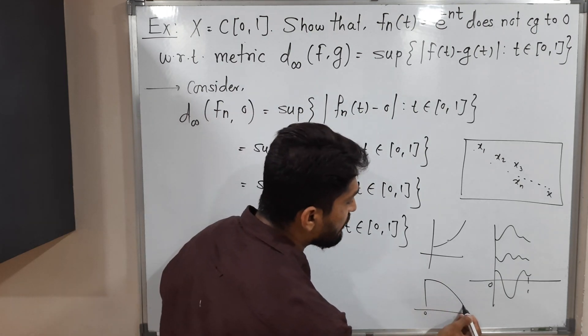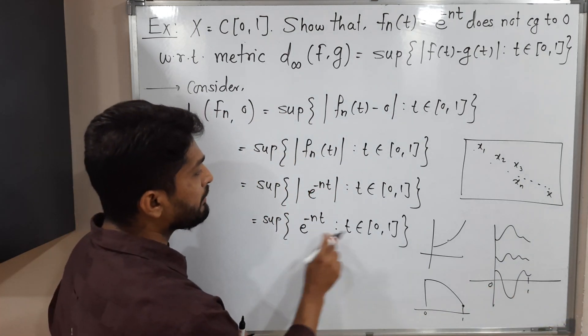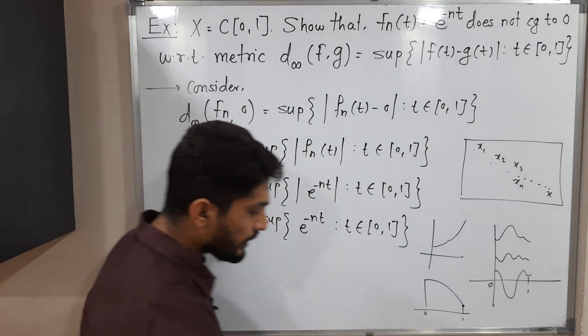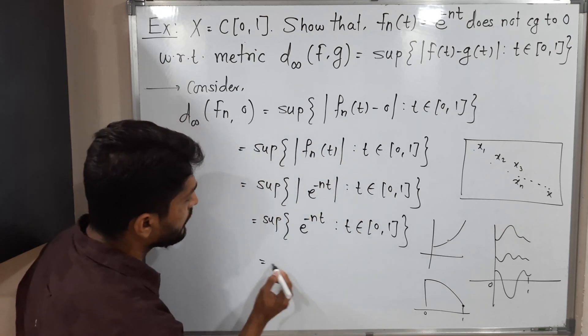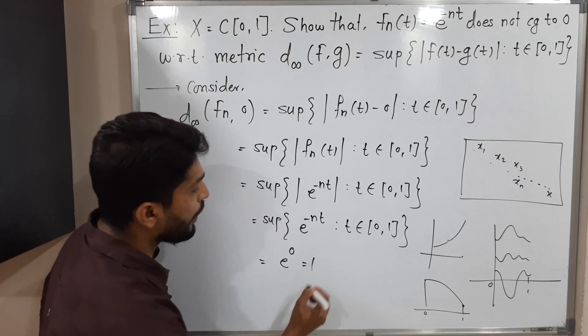And it achieves its minimum value at the last point. So obviously, its supremum will be at 0. So it is equal to e^0. What is the value of e^0? 1.